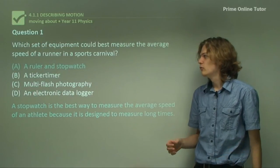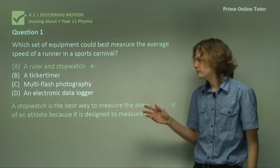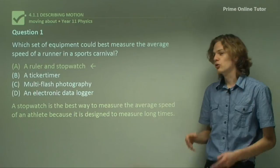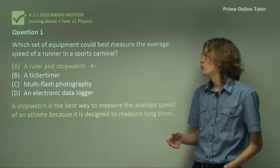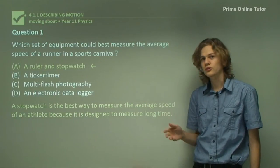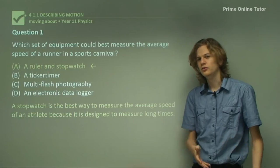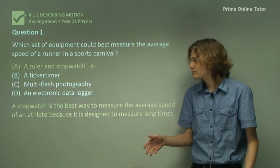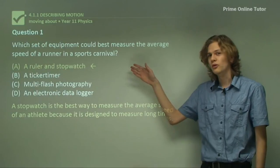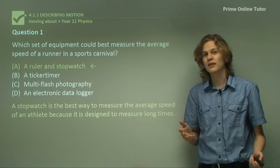And so the best way would be with a ruler and stopwatch. Now, a stopwatch is the best way to measure long distances of time. So a runner in a sports carnival could take anywhere from, you know, a minute to 10 minutes depending on the length of the race. And so a stopwatch is the only one of these which is sort of practical for measuring that length of time.